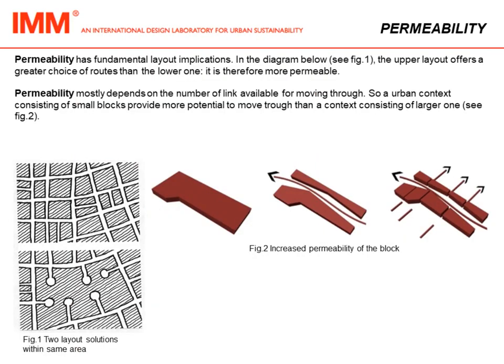Permeability has fundamental layout implications. In the diagram below, the upper layout offers a greater choice of routes than the lower one and is therefore more permeable. The presence of dead-end streets reduces permeability because they can be traversed in only one way.